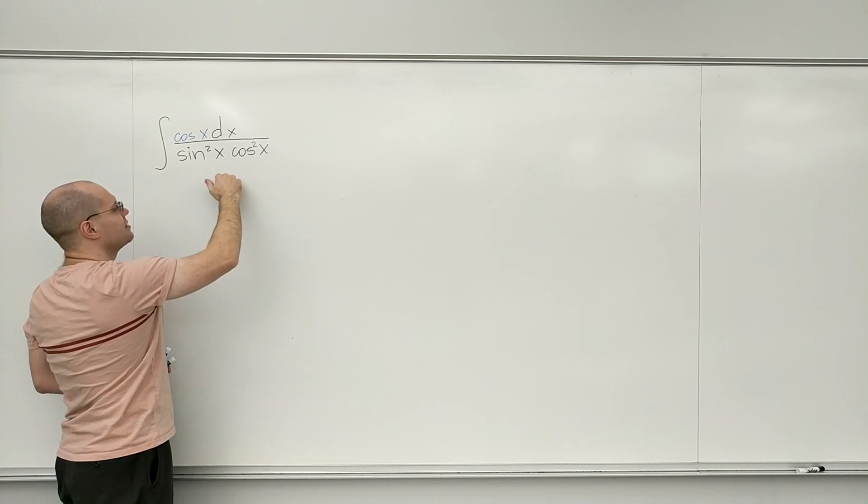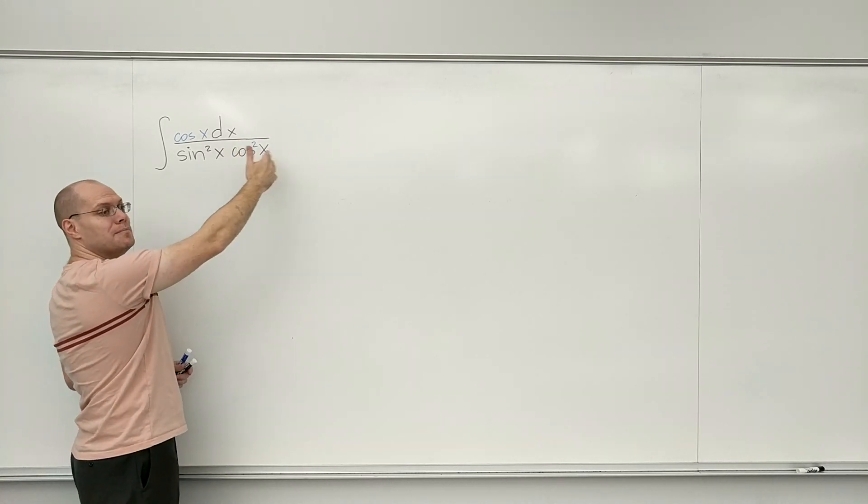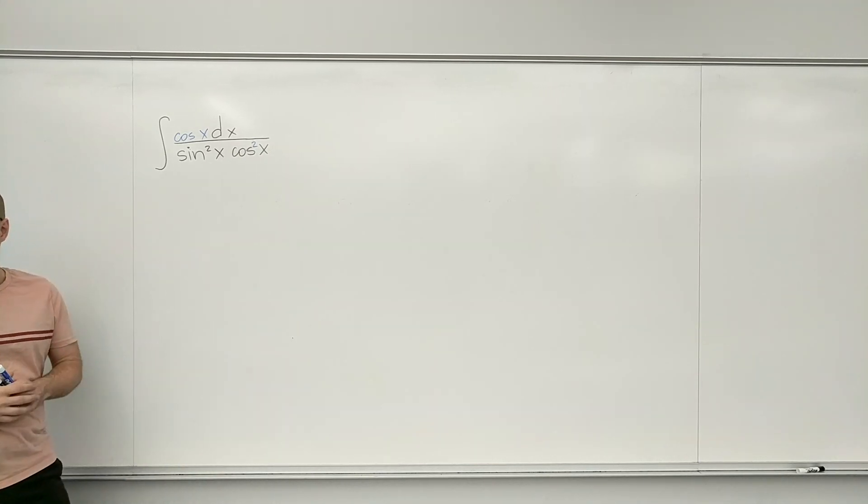But then, of course, cosine squared of x also equals 1 minus sine squared of x. By that most basic of trigonometric identities, which I'm already assuming you're on top of.